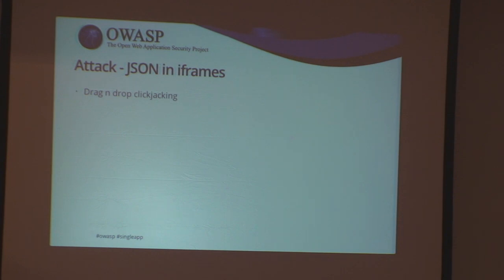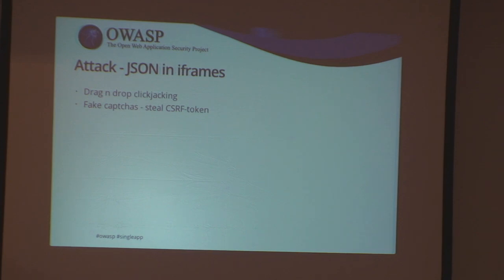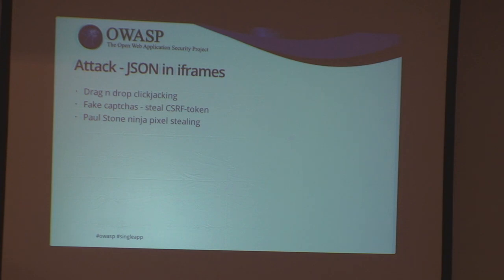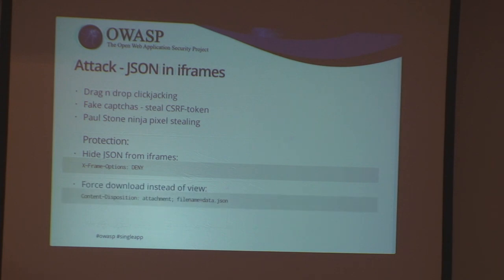There are some other attacks if we allow JSON to be displayed in iframes — we can do drag-and-drop clickjacking. We can also fake captchas where you show part of the JSON in a small window and say 'this is a captcha, please enter the code above' — but that's actually the CSRF token, so you trick the user into revealing it. And there's Paul Stone's ninja-pixel-stealing technique from the HackPro talk yesterday — you can steal the contents of JSON by SVG filters. For protection: use X-Frame-Options to disallow JSON in iframes, or use Content-Disposition attachment filename so it pops a download dialog instead.